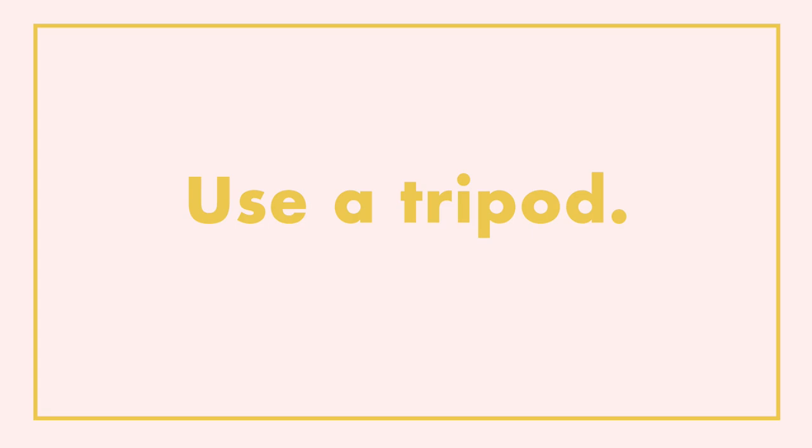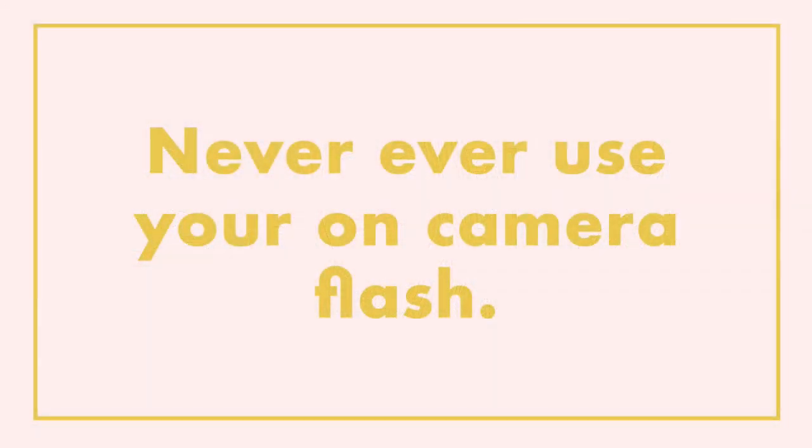Tip two: use a tripod, especially if you're using shutter speeds under 1/60. For example, when shooting at F22 to get those star lights, you'll likely need to slow down your shutter speed significantly to let enough light into the sensor — so use a tripod, and you'll find your images turn out much sharper. Tip three: do not use your on-camera flash. It's going to ruin any mood or ambience you can get with your Christmas lights. Do whatever you have to do to avoid it, and make sure you have plenty of ambient light available.